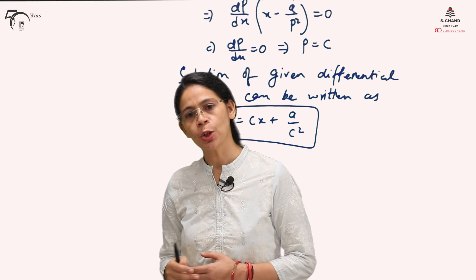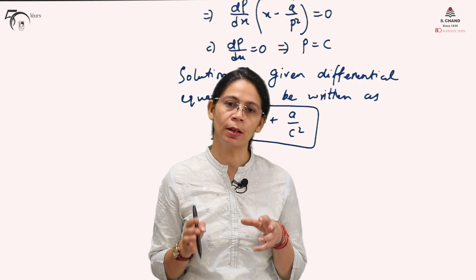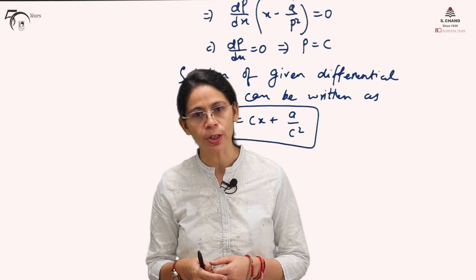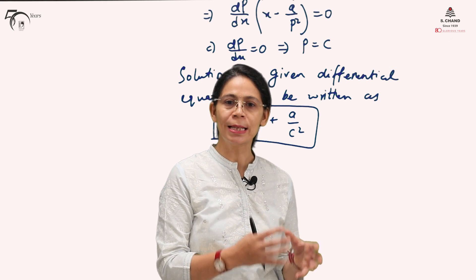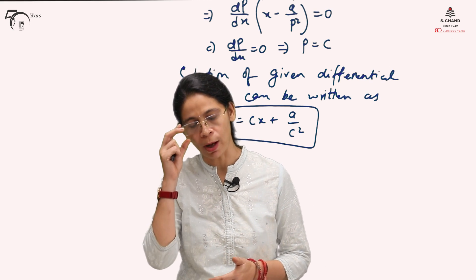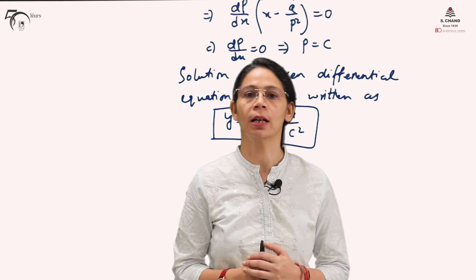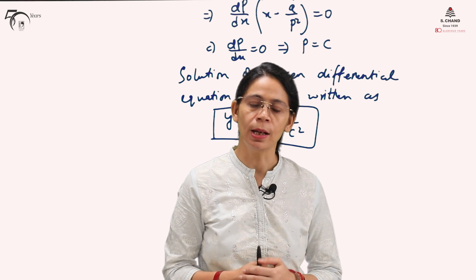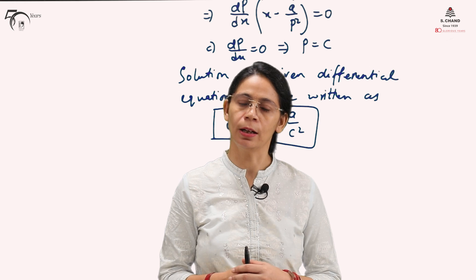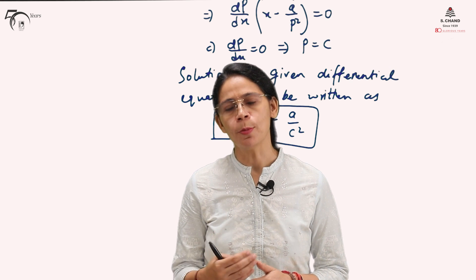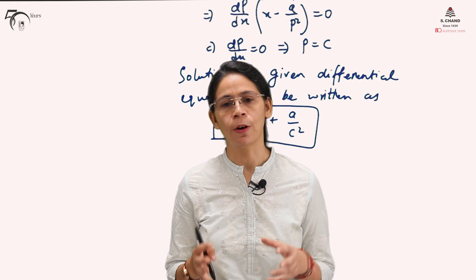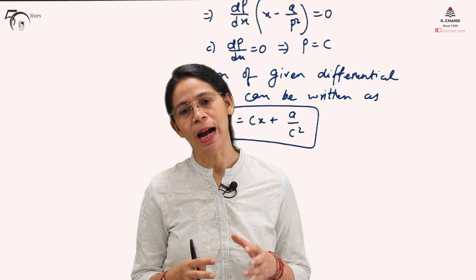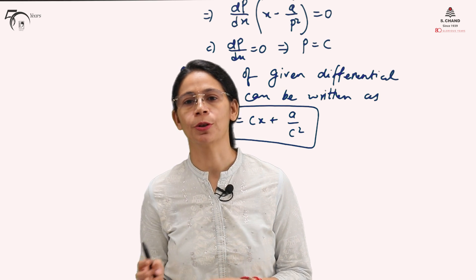Is it necessary to follow this full procedure every time? Once we verify that the given differential equation is in Claret's form, we can simply substitute c for p and find the solution directly. We will take one more example where we will first verify the Claret's form and then write the solution directly without following the full procedure.